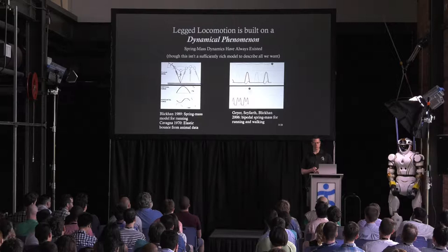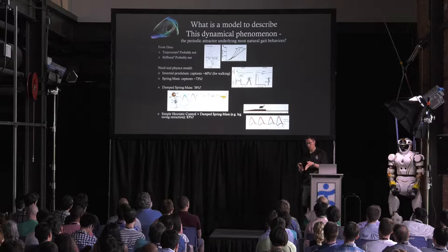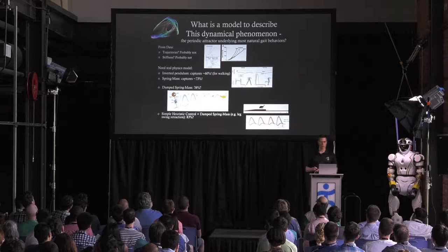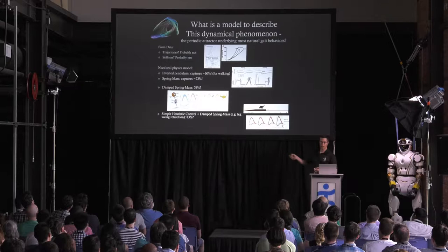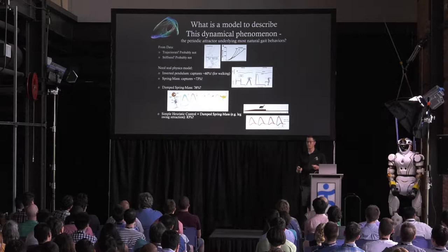What is a model to describe this dynamical phenomenon? I'm partial to models that really are descriptive of the physics — not just describing the symptoms, but actually capturing the physics. Inverted pendulum models capture quite a lot for walking, but less so for running. Spring-mass models do, but if you add a little bit of damping and optimal actuation, it gets much better — you see the little tail on each one. If you start adding simple heuristic controls on drop steps, now it's starting to describe a lot more of this dynamical phenomenon.